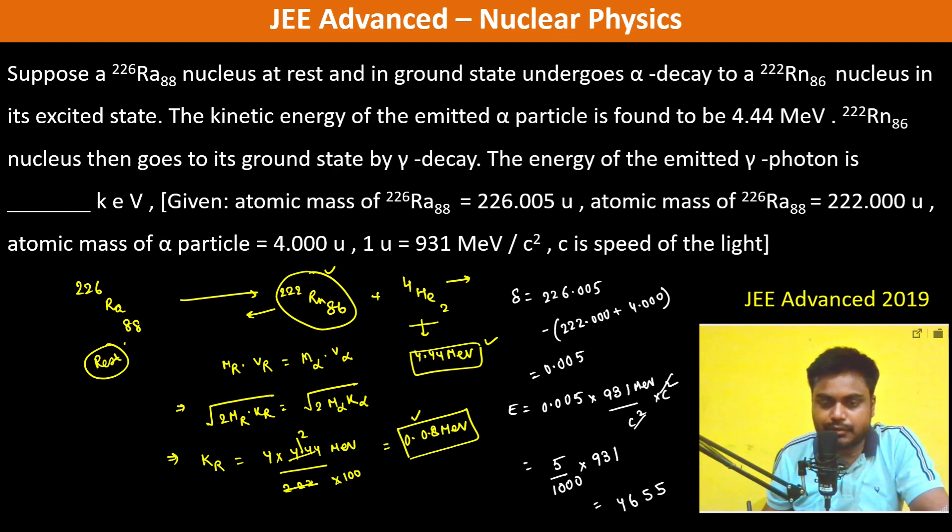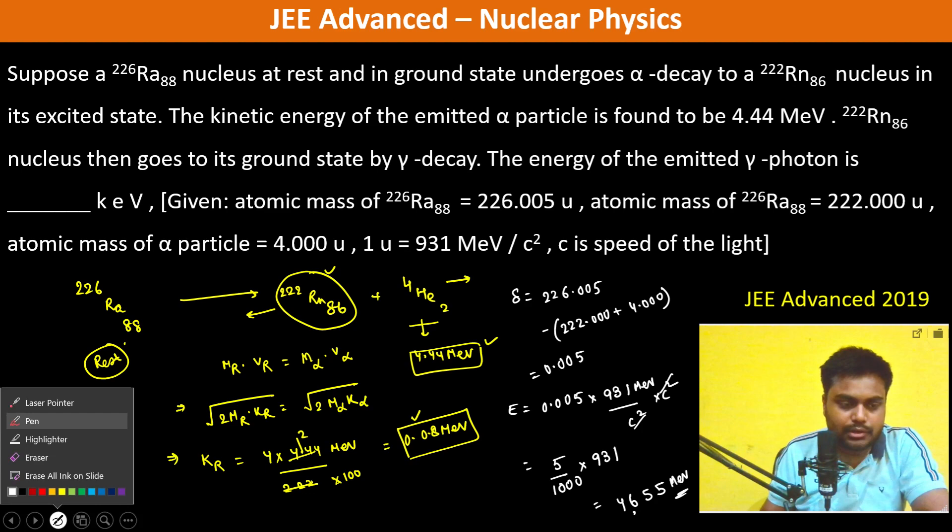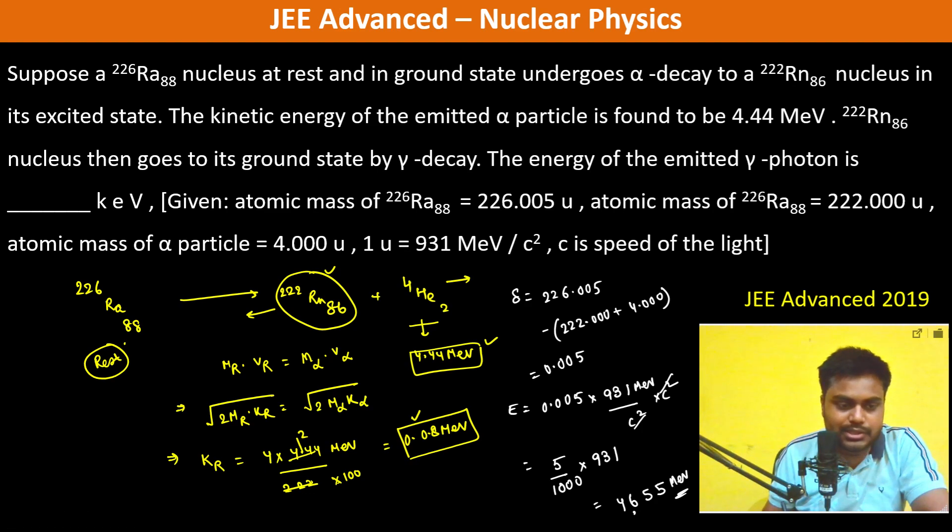So 4.655 mega electron volts. So now what energy is remaining? Now, so this much energy was liberated, this much went into the kinetic energy of alpha, and this much went into the kinetic energy of the Rn particle. So therefore, the energy which is remaining is going to be...